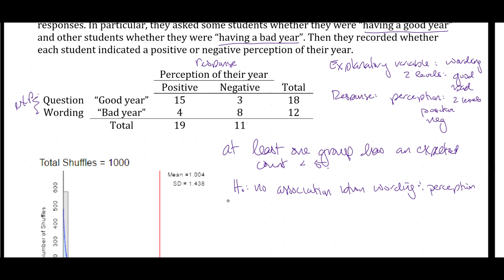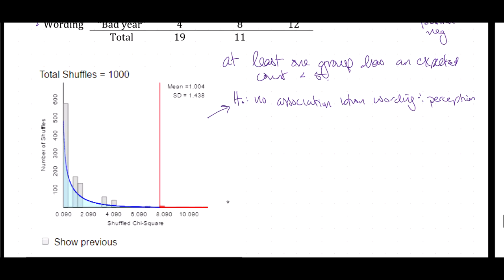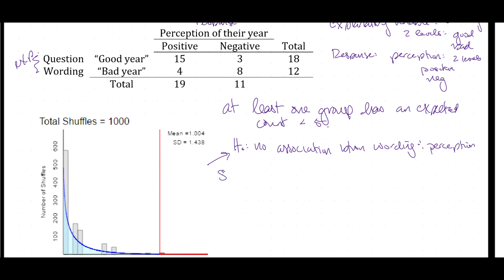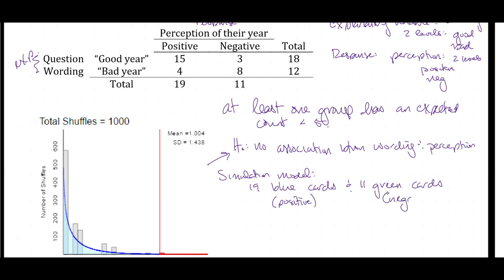How can we design a simulation that models this independence? We can do this just like we did with the Frank sign data. We have 19 blue cards to represent the 19 positive responses regardless of question wording, and 11 green cards to model the 11 people who responded negatively — because we had a total of 19 positive and 11 negative responses.